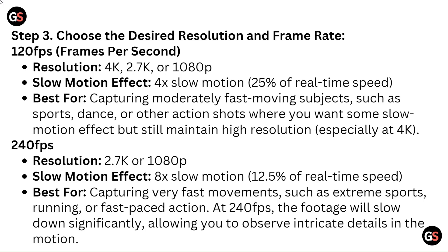At 240 fps, the available resolutions are 2.7K or 1080p, giving an 8x slow motion effect at 12.5% of real time speed. This is best for capturing very fast movements such as extreme sports, running, or fast-paced action. At 240 fps, the footage will slow down significantly, allowing you to observe intricate details in the motion.